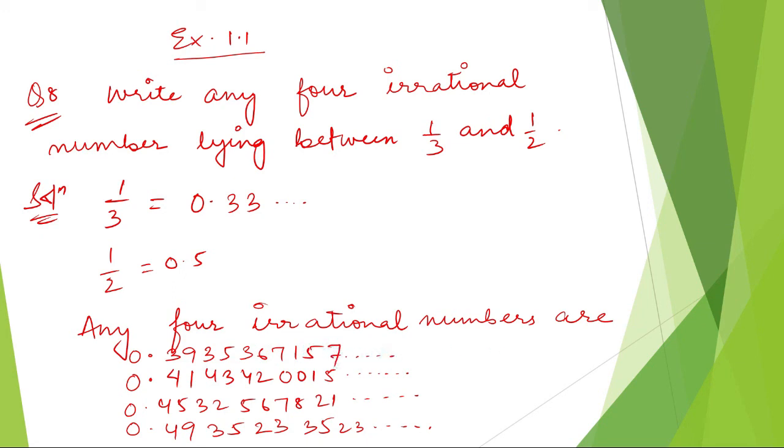That's all. Any four irrational numbers between 1/3 and 1/2 are these four numbers. Thank you so much. We'll meet in the next video.